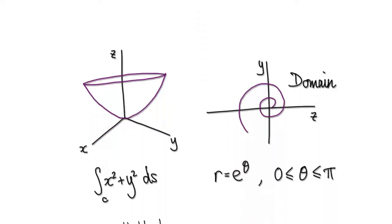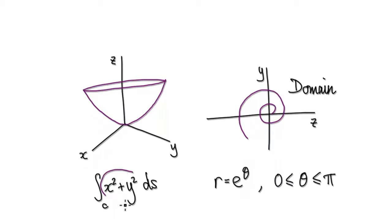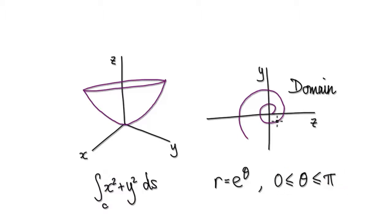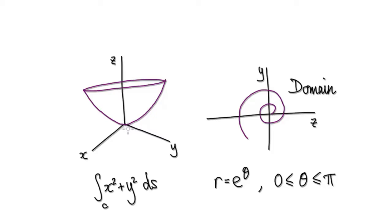In this video we're going to work out the line integral underneath this surface along this path, but we're only moving from zero to pi. On this 3D diagram the particle would move along like this on the XY plane, and then each step of the way you always jump to the surface. So really we're working out the area underneath this paraboloid.